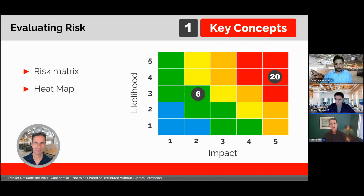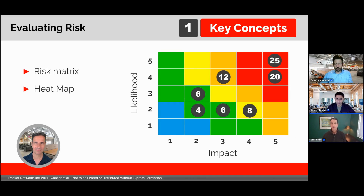If we add colors to the 25 quadrants in our risk matrix, we get what's called the heat map. When we add more risks, we can see how intuitively the heat map draws our attention to the risks that we probably want to focus on first — the red ones in the upper right corner.